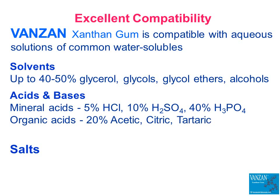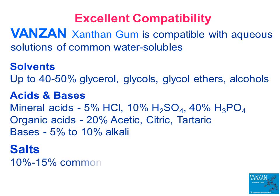Xanthan gum also provides excellent long-term viscosity stability in alkaline systems, including those containing 5% sodium carbonate, 10% sodium hydroxide, 5% sodium metasilicate, or 5% sodium phosphate. Xanthan gum is compatible with aqueous solutions containing 10% to 15%, and in some cases up to 30%, of common inorganic salts. These high ionic strength solutions maintain stable viscosity over extended storage periods.